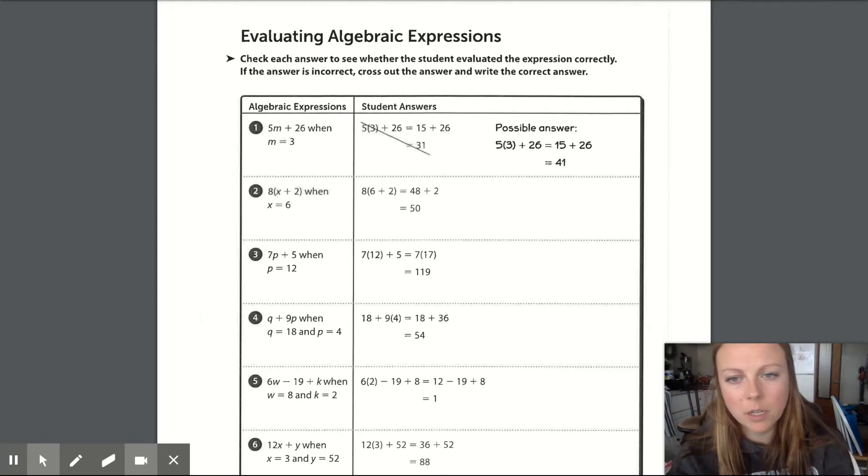So they give you an example. M is 3, so we're going to substitute, meaning we're replacing the variable with the number. This doesn't make it 53, right? This is 5 times 3 plus 26. So I like how they added the parentheses there to indicate that's multiplication, not the number 53.